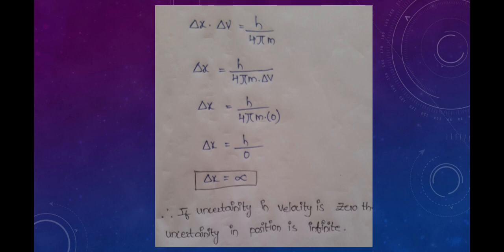If delta v is infinite, what is the certainty in position? From delta x into delta v equals h by 4 pi m, delta x equals h by 4 pi m into delta v. Taking delta v equal to zero, delta x equals h divided by zero, which means delta x is infinite. So if the uncertainty in velocity is zero, then the uncertainty in position is infinite.